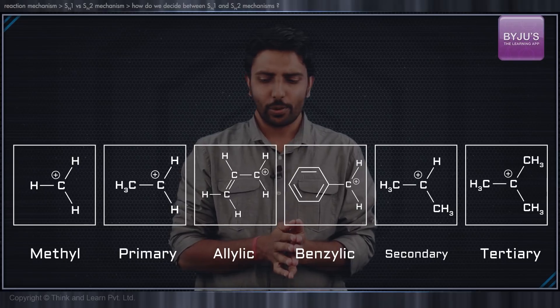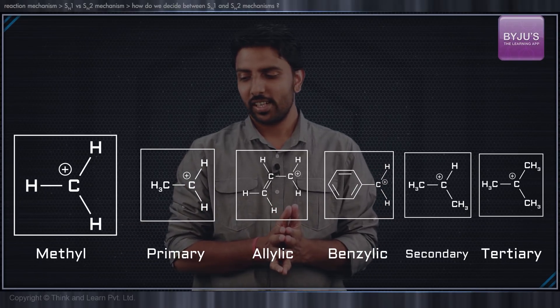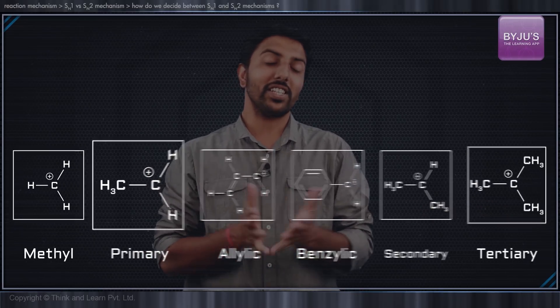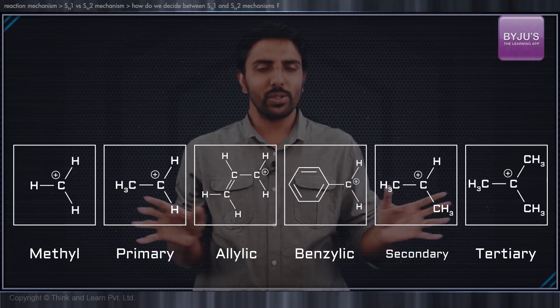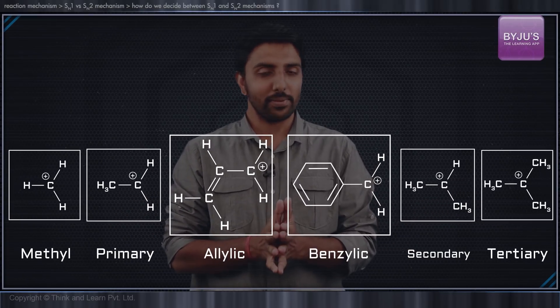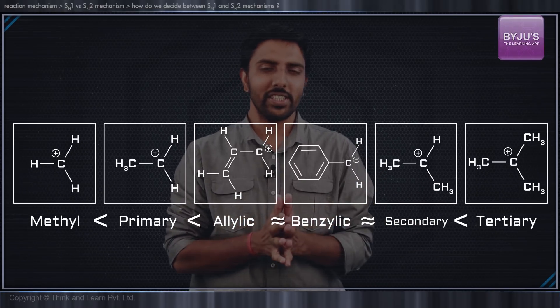So let us tabulate the entire species. Here we have the methyl group or the methyl substrate, followed by the primary substrate, and on the other extreme, we have the tertiary substrates. Between these two extremes, we have the allylic, benzylic, as well as secondary substrates.